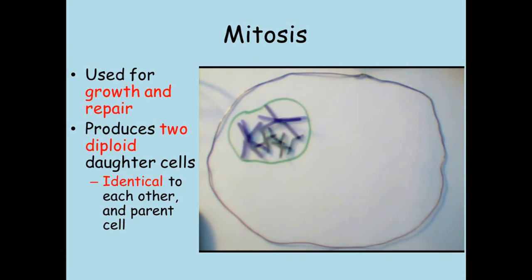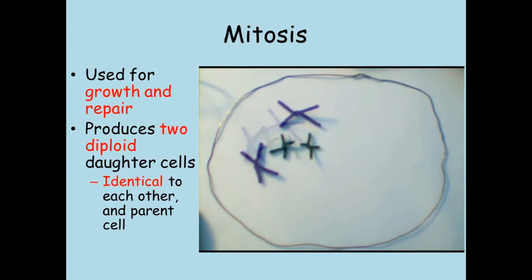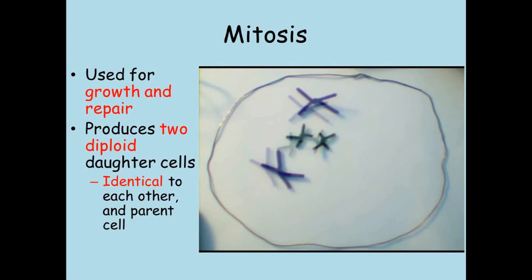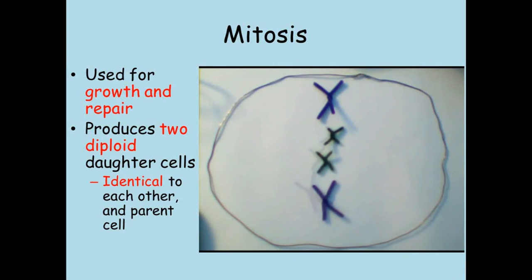The first thing that happens is the DNA is copied inside the nucleus. The copies of chromosomes are attached to each other and appear as X shapes when seen under the microscope. The nucleus disappears so that the chromosomes can line up in pairs down the centre of the cell. The pairs of chromosomes are then pulled apart to each side of the cell.